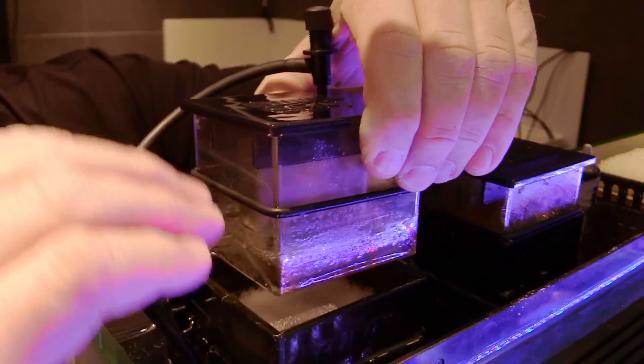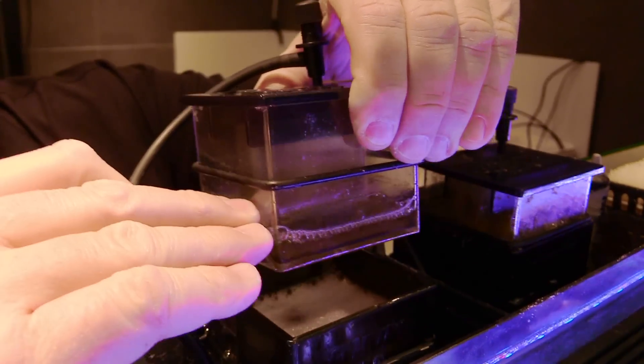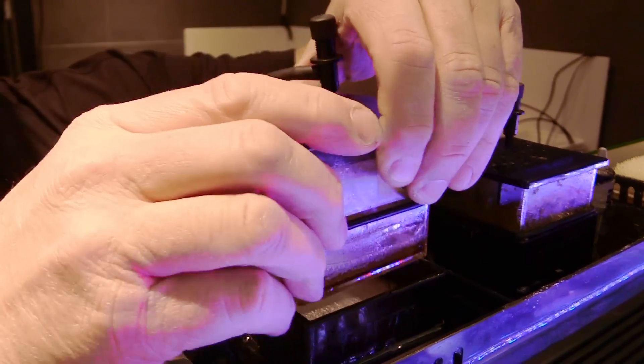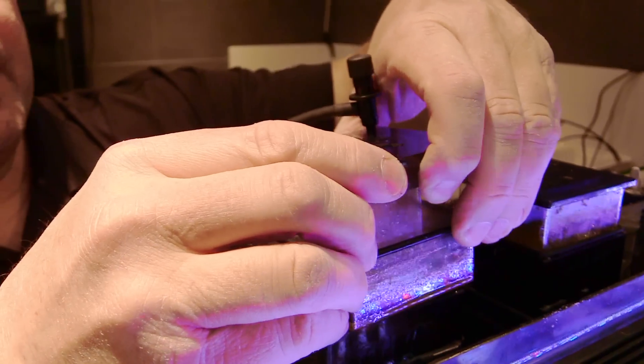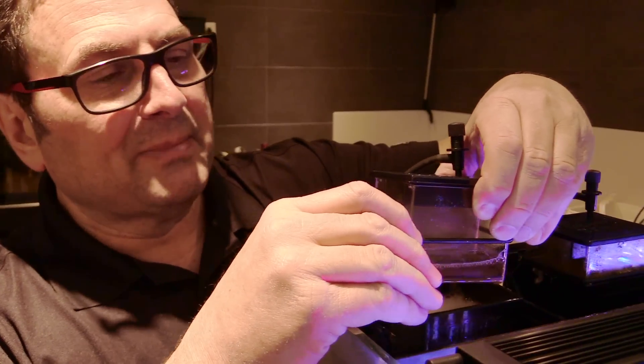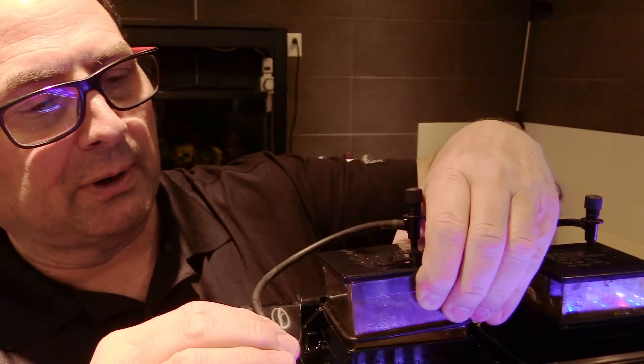What we're going to do is lift the skimmer cup up in relation to the skimmer body, so we're going to roll that o-ring down a little bit. That should contribute to ending up with drier skimmate, meaning skimmate with less water, and it should be a little darker.